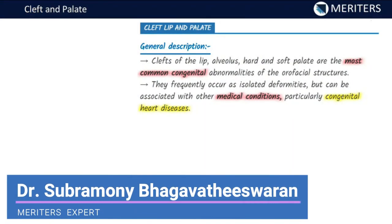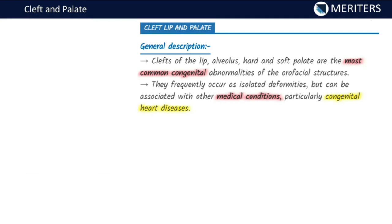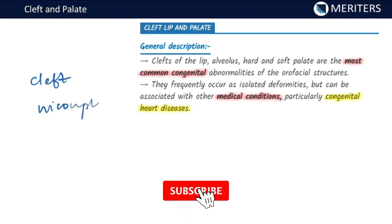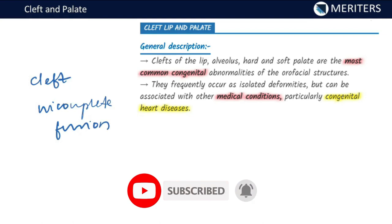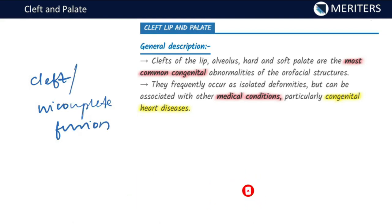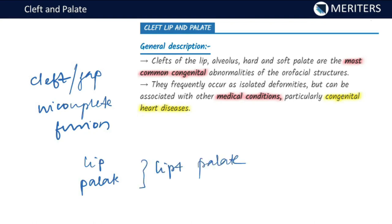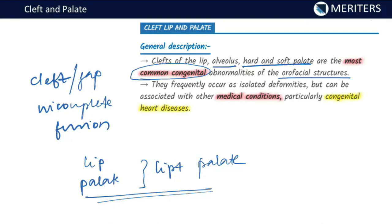In this session we'll be discussing cleft lip and palate. Cleft means it results from incomplete fusion — there is a cleft or gap formation where tissues are incompletely fused together. You can see clefting of the lip, clefting of the palate, or both combined. Cleft of the lip, alveolus, hard and soft palate are the most common congenital anomalies of the oral facial structures.